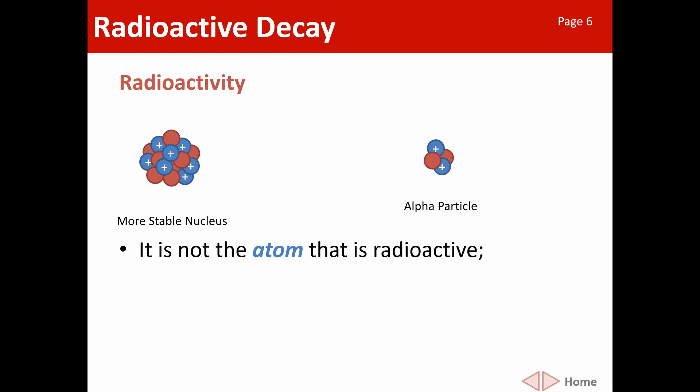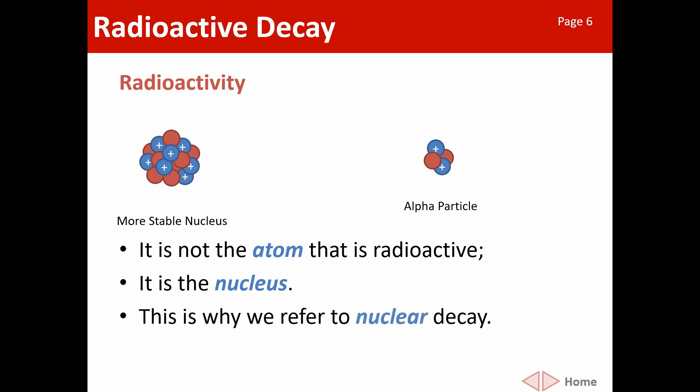It's important to remember that we don't talk about an atom being radioactive — it's the nucleus that decays. This whole thing is called nuclear decay and we're always talking about the nucleus. If a nucleus is radioactive, it means it is going to decay and give out radiation.